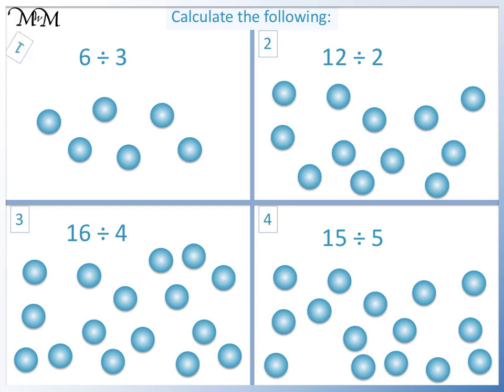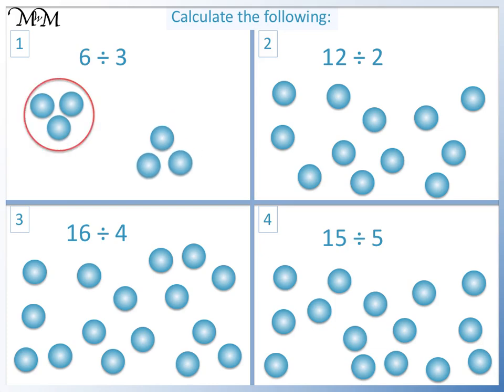Question 1. We are dividing into groups of 3. We have 1 group of 3, 2 groups of 3. So 6 divided by 3 equals 2.